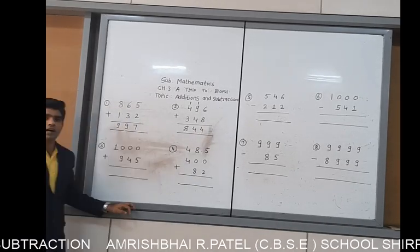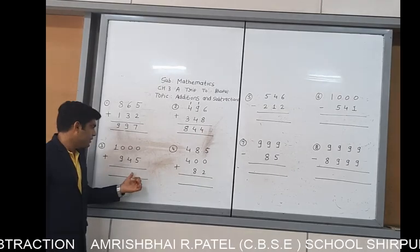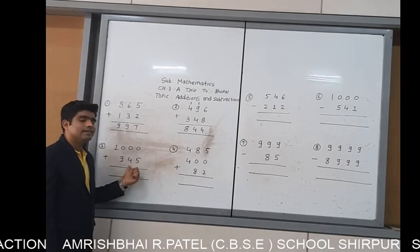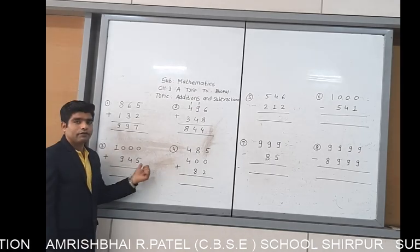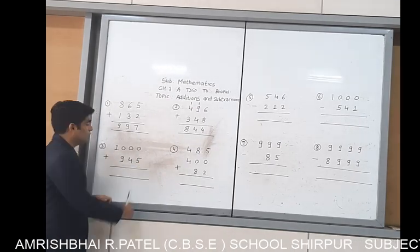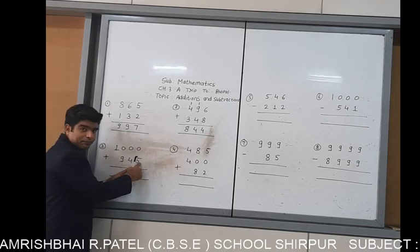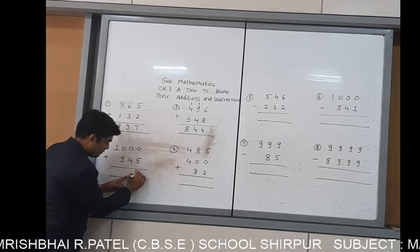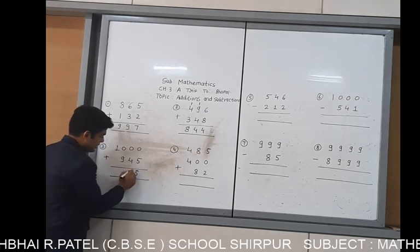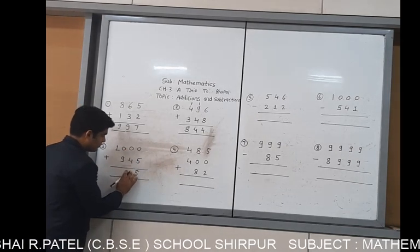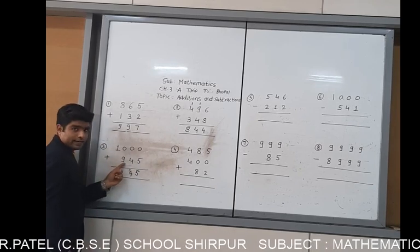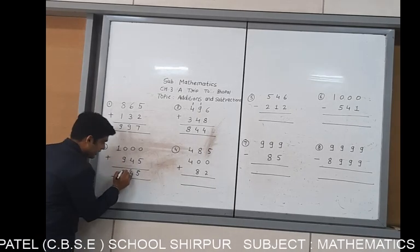Now let's start from the third example. The third example involves 1000 and 945. 0 plus 5 is 5. 0 plus 4 is 4. 0 plus 9 is 9.